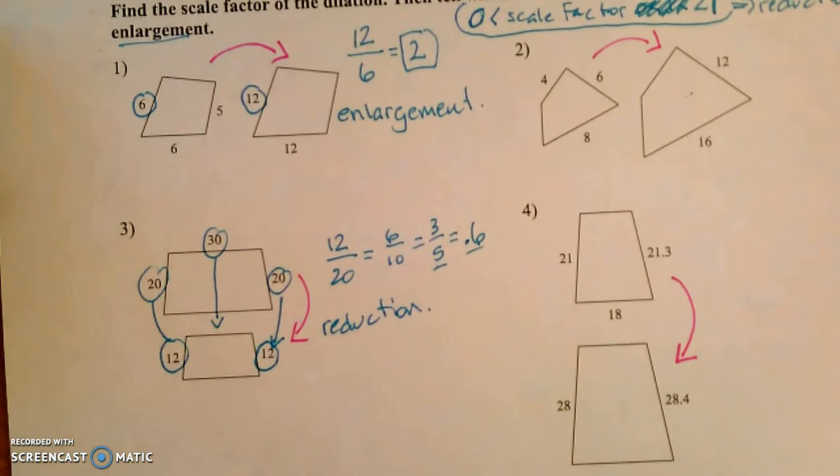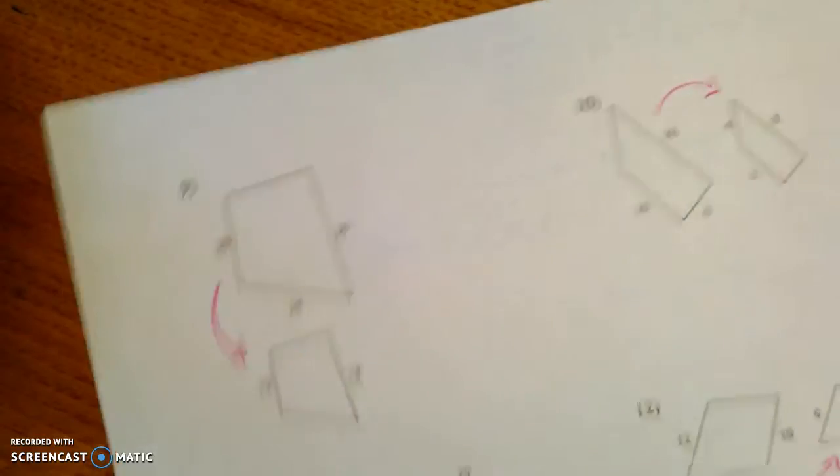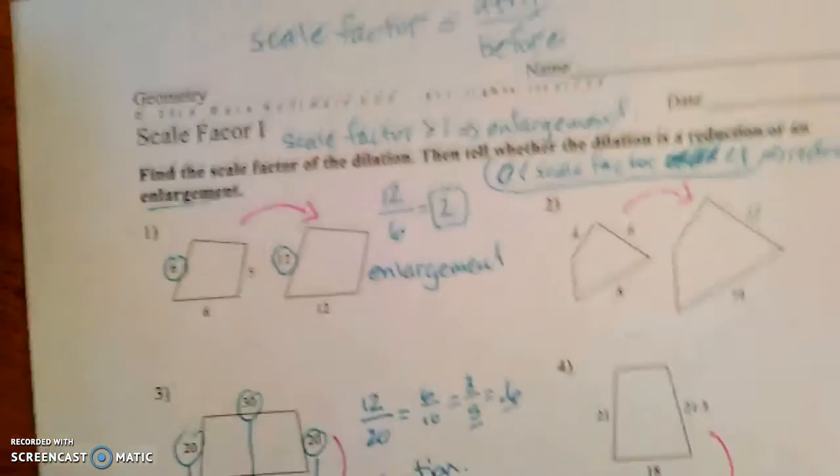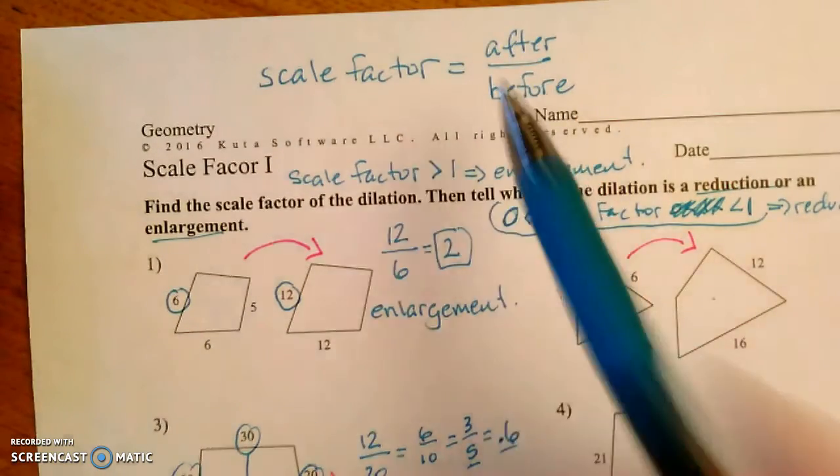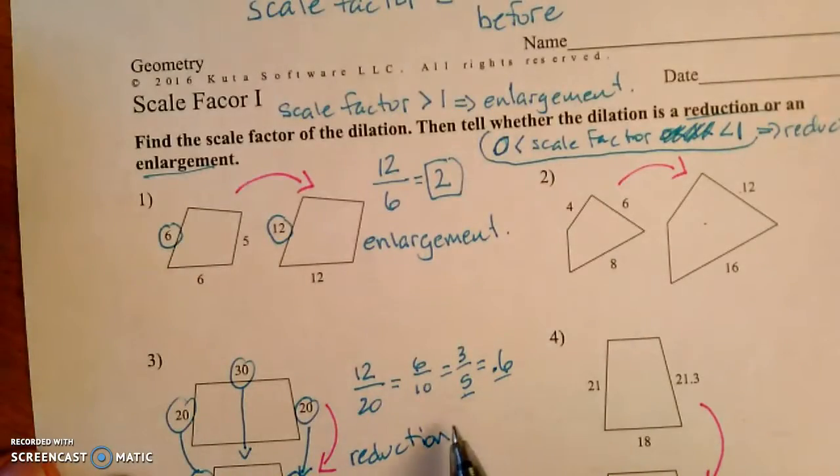So go ahead with the rest of these. You've got the front and just a few on the back there. Again, you want to figure out what the scale factor is. In every case it's after divided by before, and you could turn it into a decimal if it's appropriate.